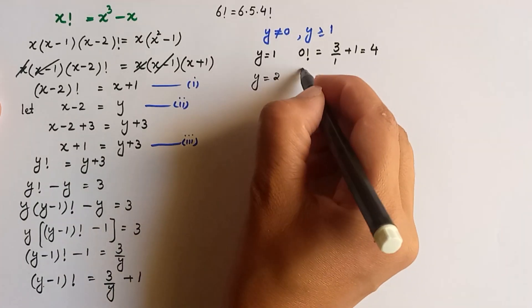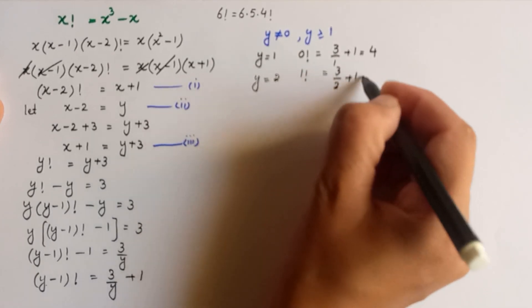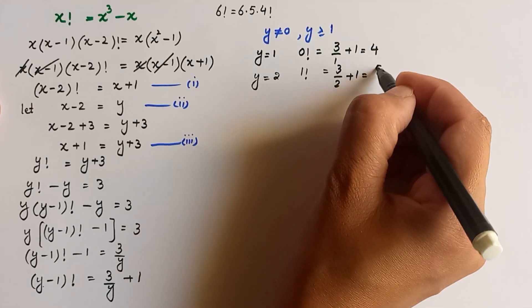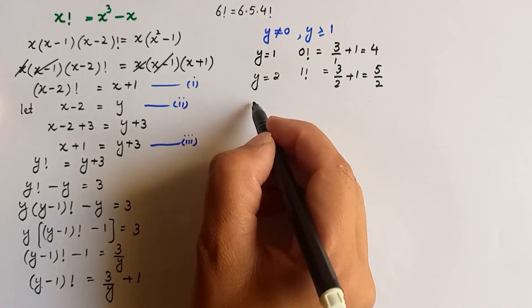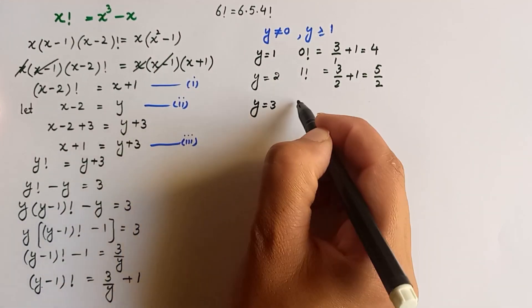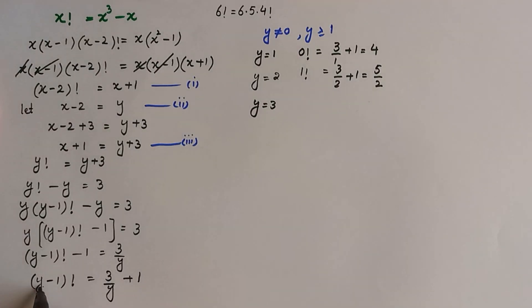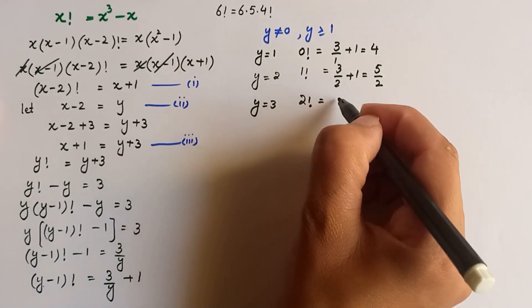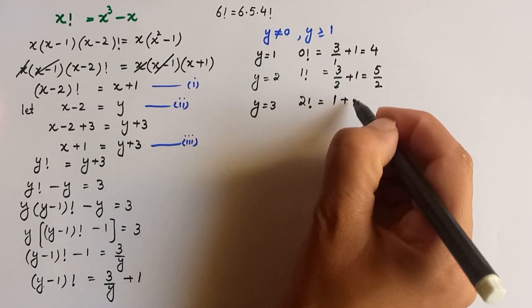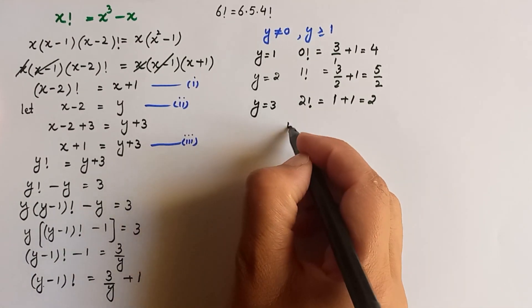Putting y equals 2: (2 minus 1) factorial equals 3 over (2 plus 1), so 1 factorial equals 5 over 2 — not true. Trying y equals 3: (3 minus 1) factorial equals 3 over (3 plus 1), so 2 factorial equals 2. This is true, so y equals 3.